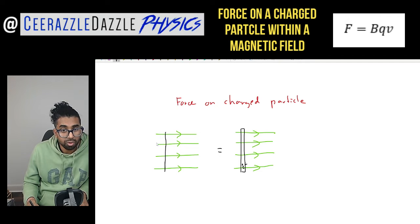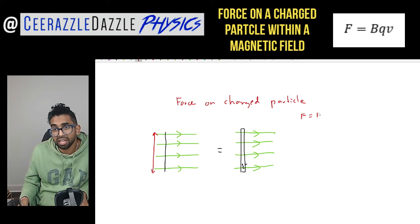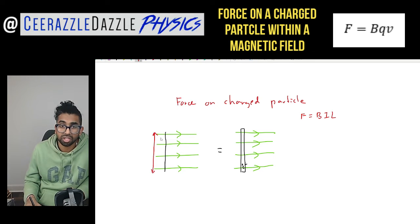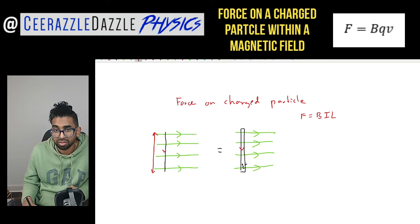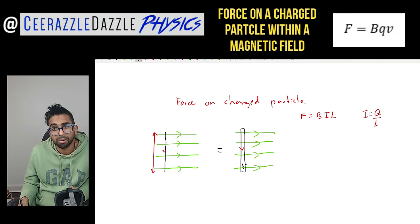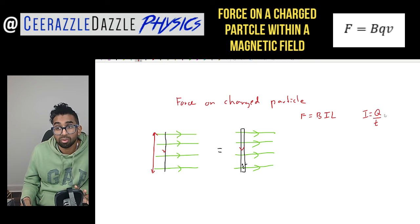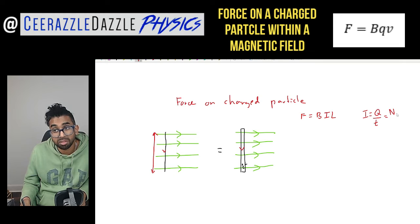We already know that the force on the entire wire is going to be F is equal to BIL. But we know that the current flowing through this wire — the current will be equal to the charge flowing per unit time. The charge will be equal to the number of electrons times by the charge of each electron, divided by time taken.